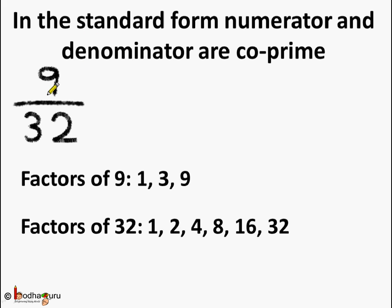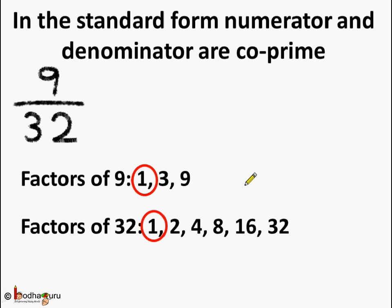Let us see in the case of 9 by 32. They both have many factors. The factors of 9 are 1, 3, 9. And what about 32? The factors of 32 are 1, 2, 4, 8, 16 and 32. Now let us find out what are the common factors of 9 and 32 — it is only 1. So we can say 9 and 32 have only 1 common factor which is 1. So 9 and 32 are co-prime numbers. Since 9 and 32 are co-prime numbers, we can say 9 by 32 is a fraction which is in standard form or the simplest form.